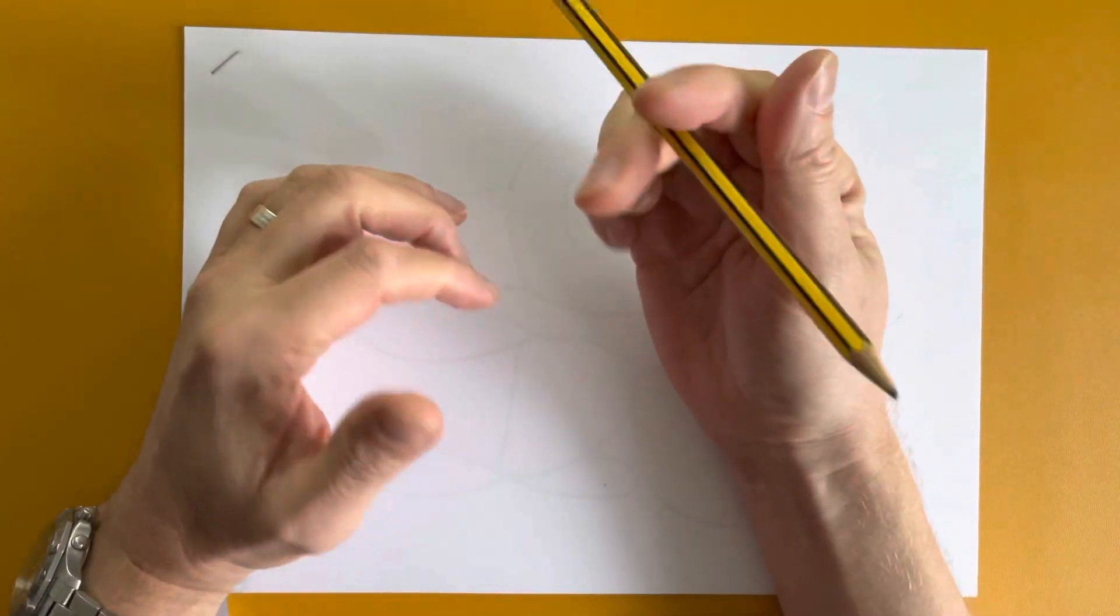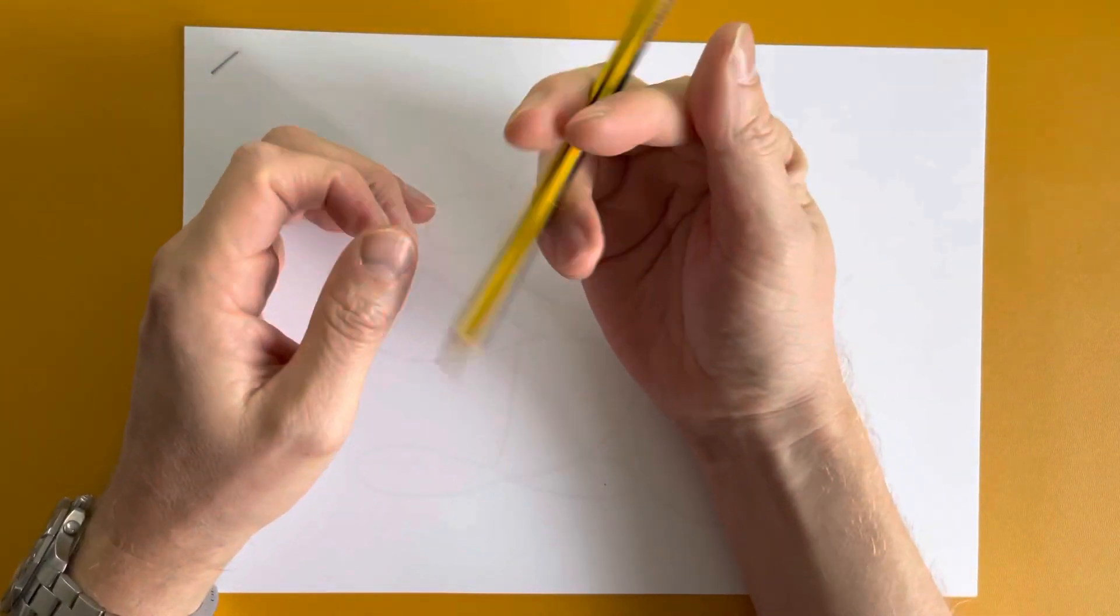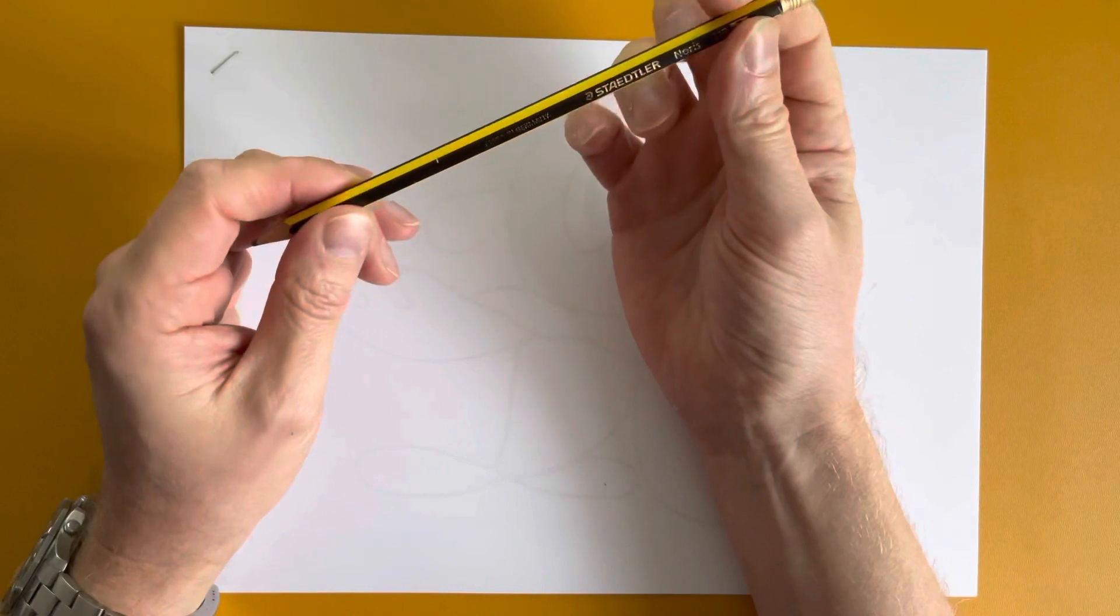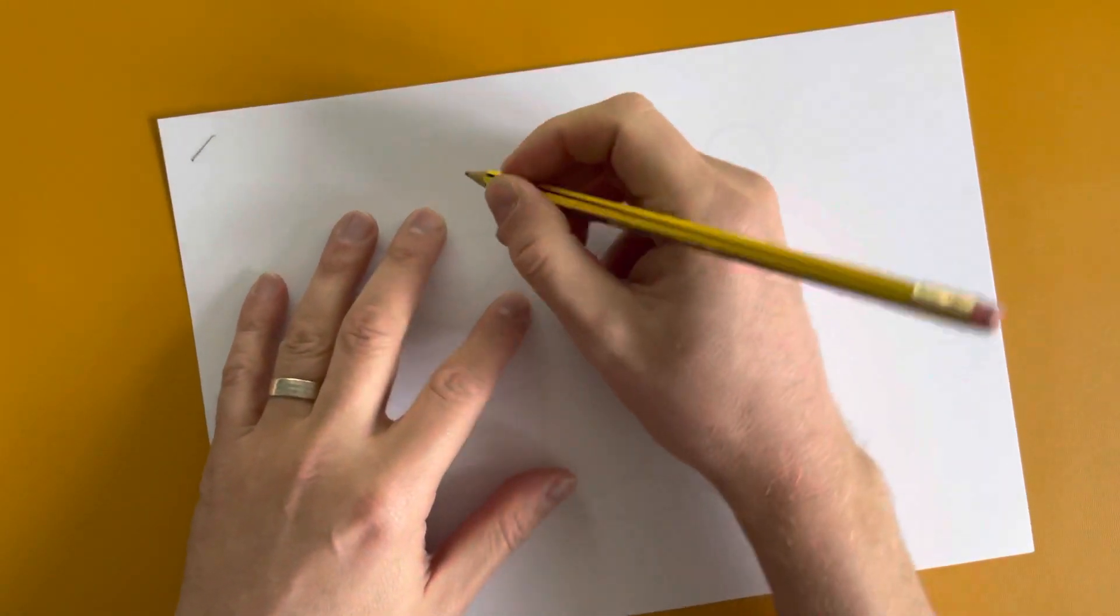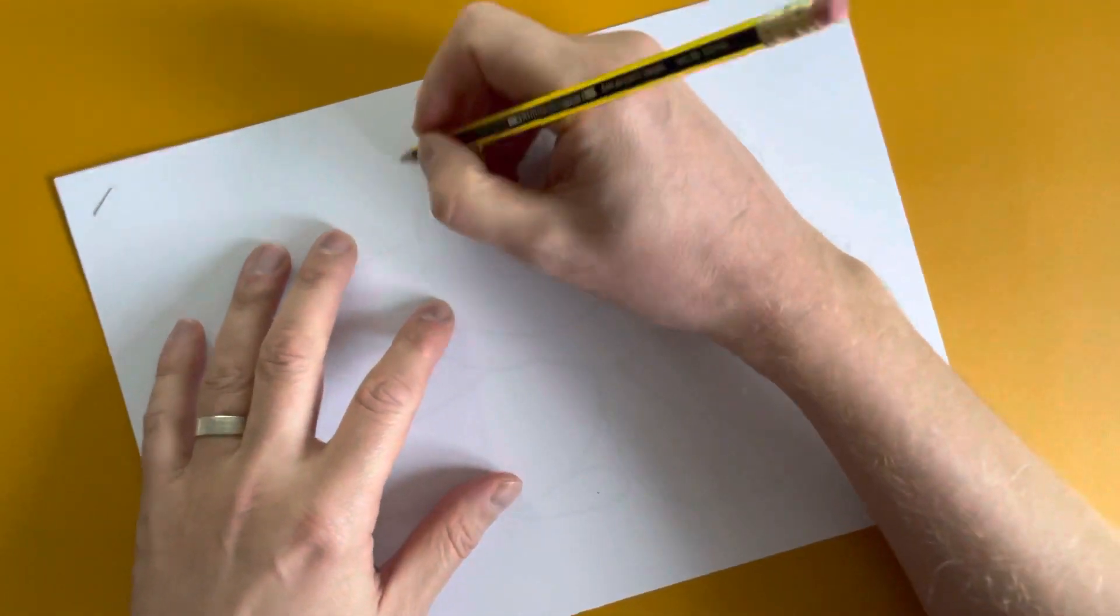In this video I'll be showing you how to draw Popplio from Pokemon. I'll be using just a normal HP pencil and some paper taken from my printer. So let's get going. I'm gonna start with his head.